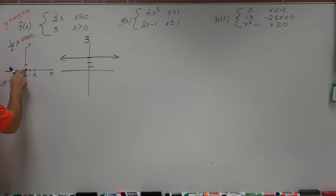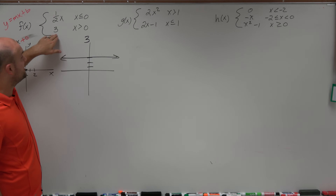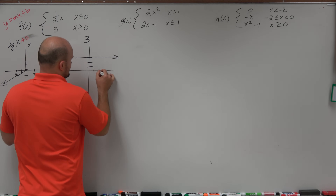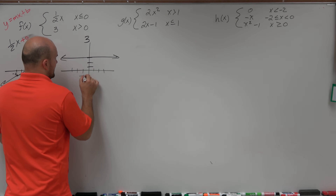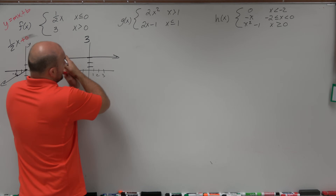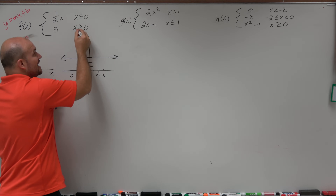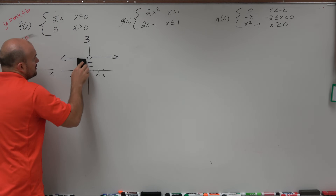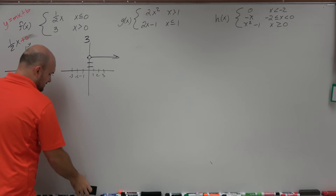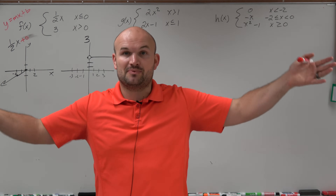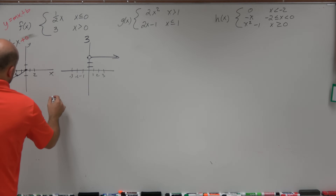That constraint is greater than or equal to, so that is going to be filled in. Here, we're only graphing the function three for x values that are greater than zero. We're only graphing for positive values, but it's not greater than or equal to — so zero is not included, and we're going to use an open circle. Then we go ahead and delete the rest. Now that we've graphed them separately and added in their constraints, we just combine them into one graph.